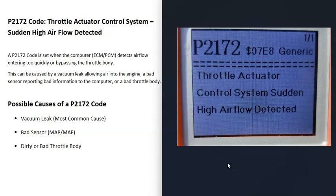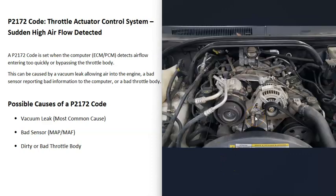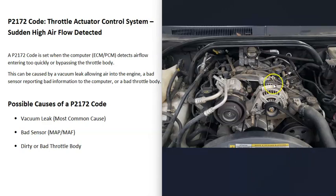The first and most common cause of a P2172 code is that air is getting into the engine going around the throttle body. This could be something like a leaky hose, a bad gasket, a bad PCV valve, or something along those lines. There are different ways to test for a vacuum leak.